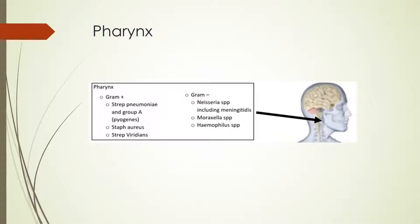Moving on back to the throat, we're starting to run into gram-positives like Strep pneumo and Group A Strep, along with Staph aureus and Strep viridans. We're also seeing gram-negatives like Neisseria — including N. meningitidis — Moraxella, and Haemophilus species. Remember that anything you find in the mouth you can also kind of find back here. Empiric coverage is a bit trickier — for throat infections we're looking to cover gram-positives like Group A Strep, but gram-negatives can cause upper respiratory infections as well, so you really have to think about where you're treating and what the likely organisms are.